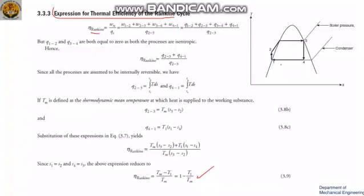Here we have 1 to 2, 2 to 3, 3 to 4, and 4 to 1. From the first law, we can write this as q1 to 2, q2 to 3, q3 to 4, plus q4 to 1.